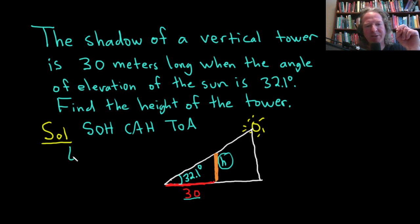So the tangent of 32.1 degrees is equal to opposite over adjacent. So it'll be h divided by 30. The tangent of our theta, which is 32.1, is opposite over adjacent. And all we have to do here is solve for h. So pretty easy.